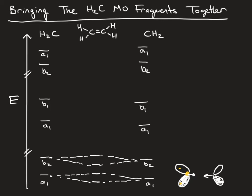Ethene is in D2H symmetry, so we have to change our symmetry labels. Going through the lower-energy combinations: this one will have AG symmetry, this will have B1U, the next one up will have a B2U symmetry label, and then we'll have a B3G symmetry label. I'll be plotting these molecular orbitals on the next slide so you can see what they look like and verify these symmetry labels. The higher-lying MO fragments are going to combine in a similar manner.